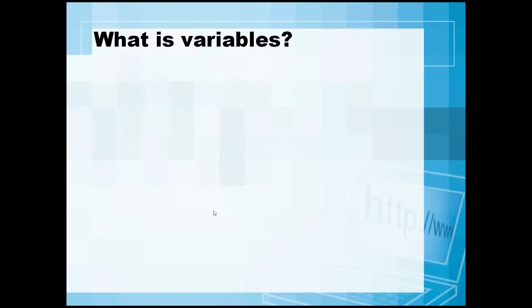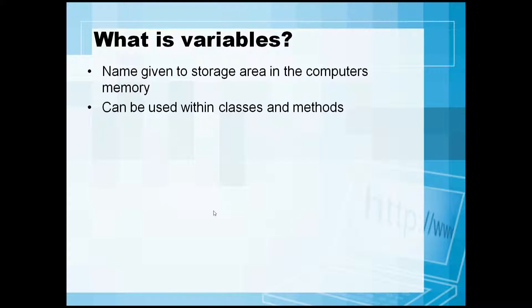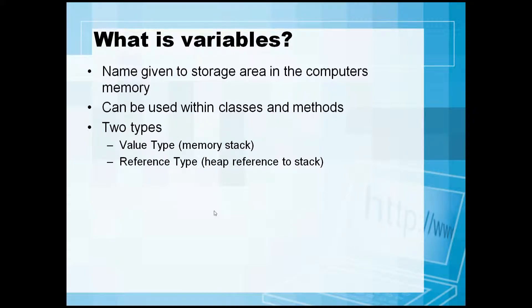What is a variable? A variable is a name given to a storage area in the computer's memory. It can be used in classes and methods. You have two different types of variables: a value type variable, which is stored in the memory stack, and a reference type variable, which is stored on the heap with a reference to the stack.